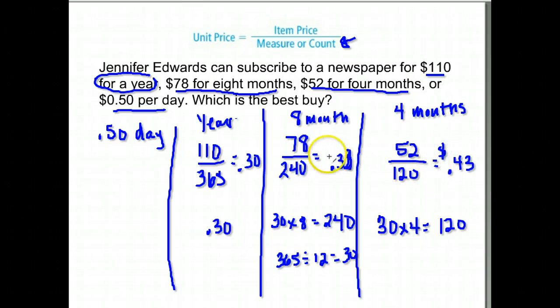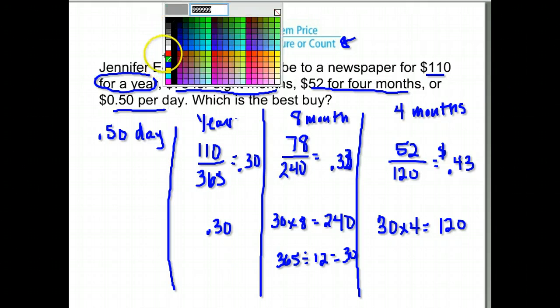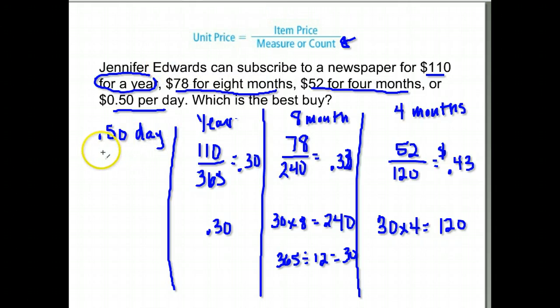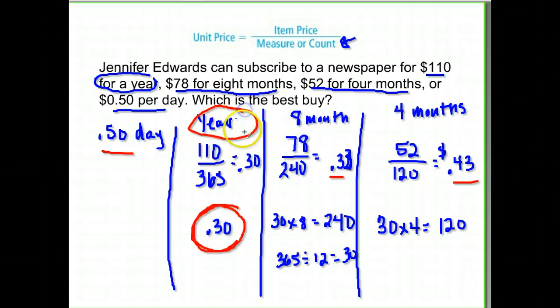And this is how pricing usually works. The longer you're committing to, the lower your price is. We can clearly see that daily is the worst option. Four months is the next. Eight months is next. But the best option is buying it for a year because you get 30 cents. So the best buy would be to buy for the full year.